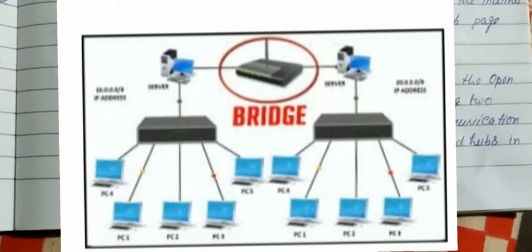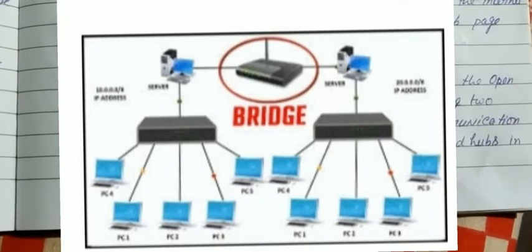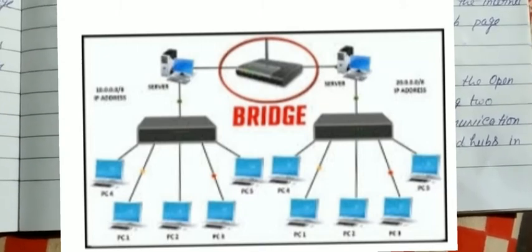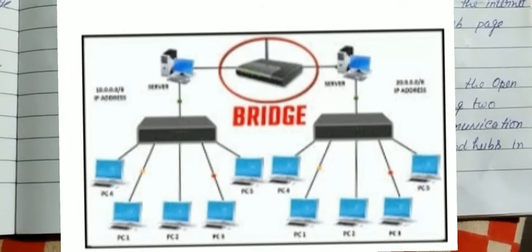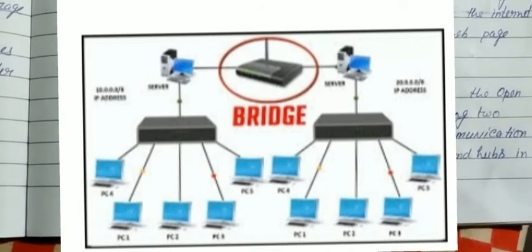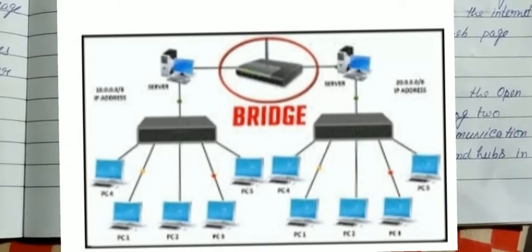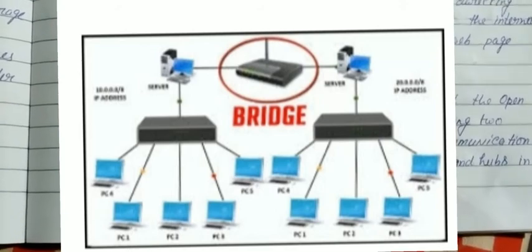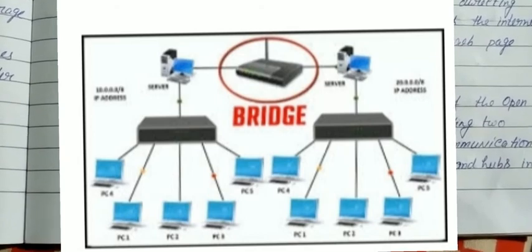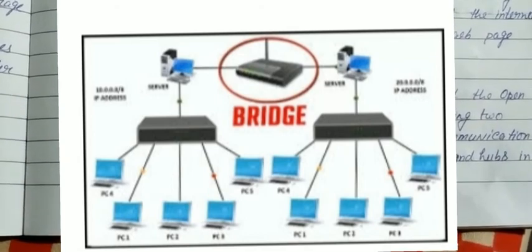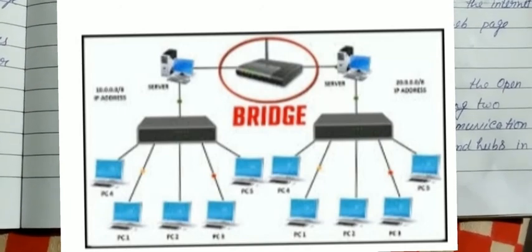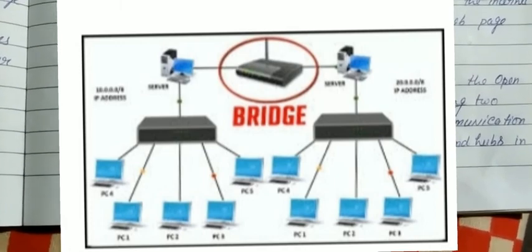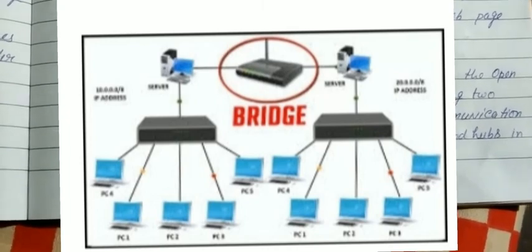Bridge OSI model ki data link layer par work karta hai. OSI model mein data link layer kaun si hoti hai? Hamare sender ki side se chhe number ki layer hoti hai — chhat layer data link layer hoti hai jisme haara bridge work karta hai. Bridge repeater aur hub ke jaisa hi hota hai. Hub aur repeater ek port par data receive karke sab ports par data copy kar dete hain. Aise hi bridge bhi kaam karta hai — bridge ek port par data receive karke sab ports par usse copy kar deta hai.